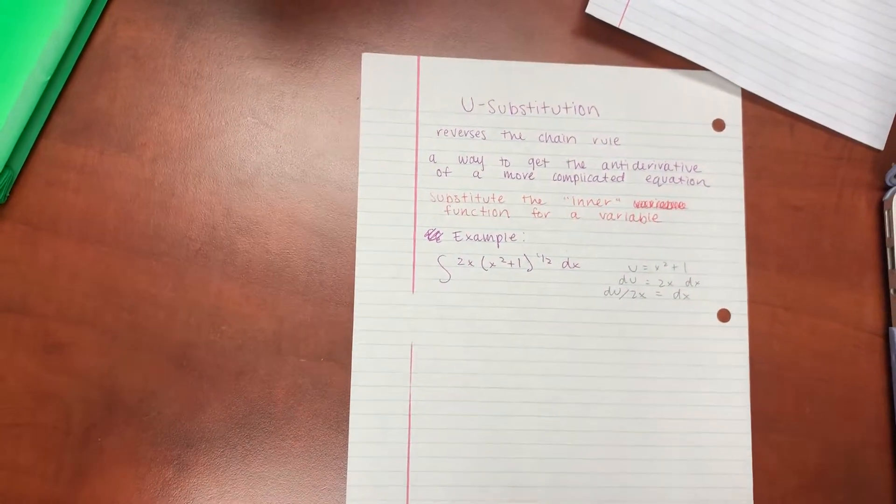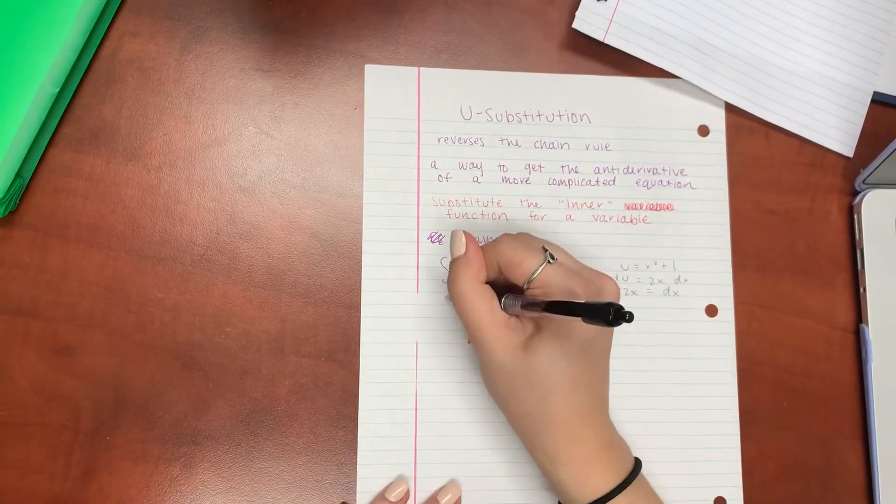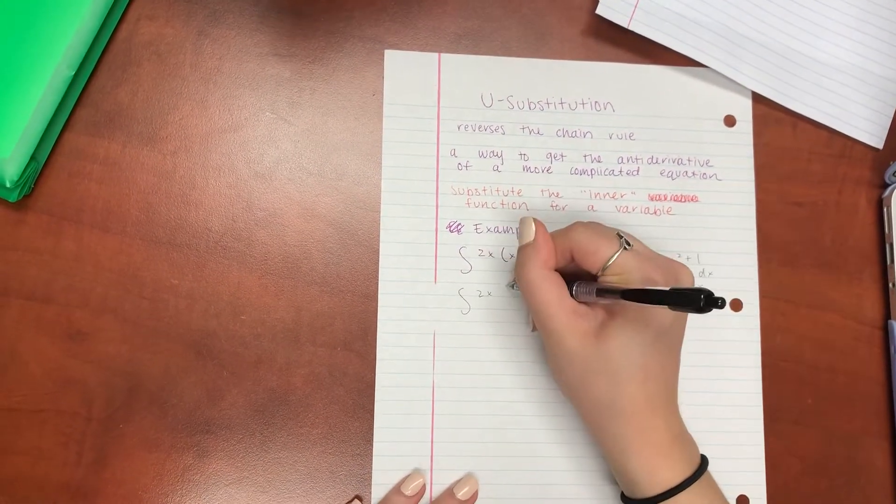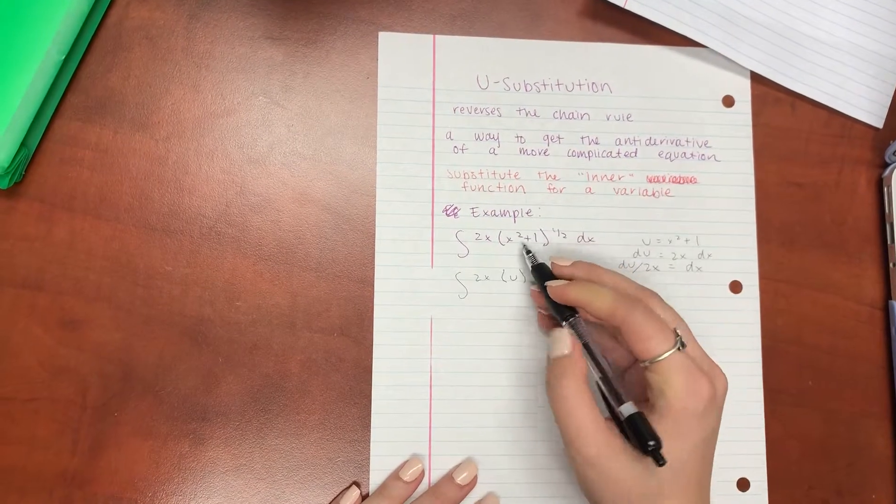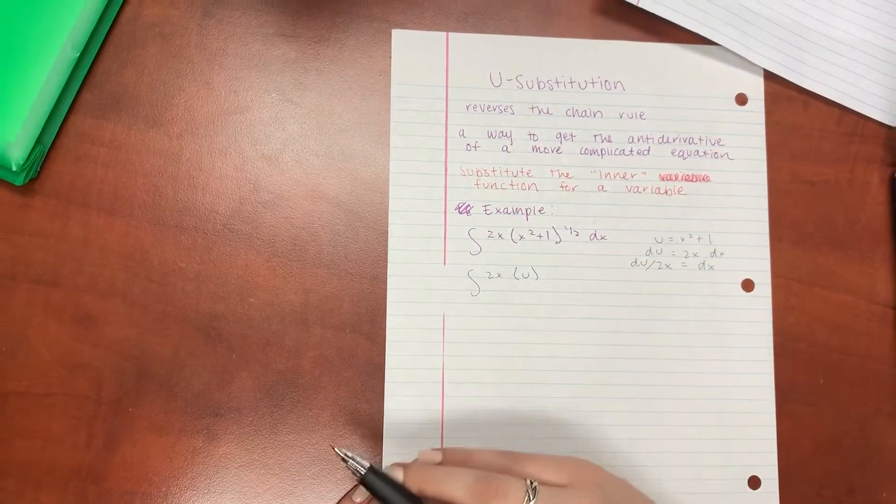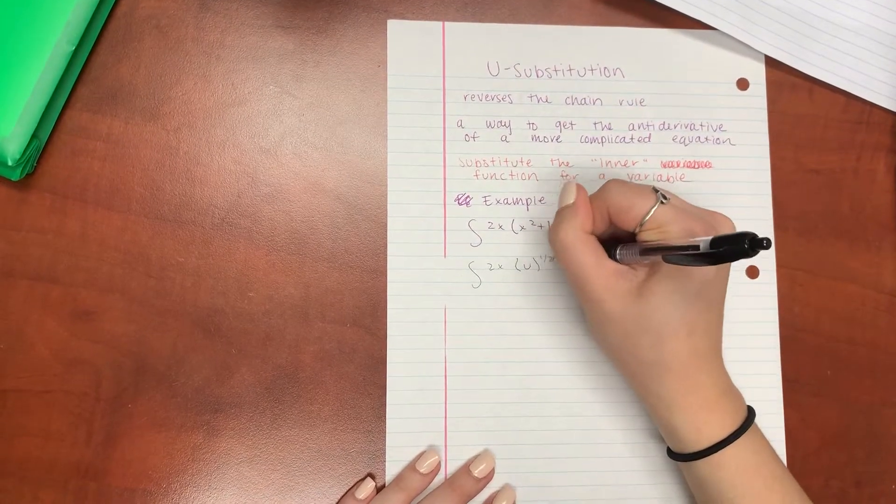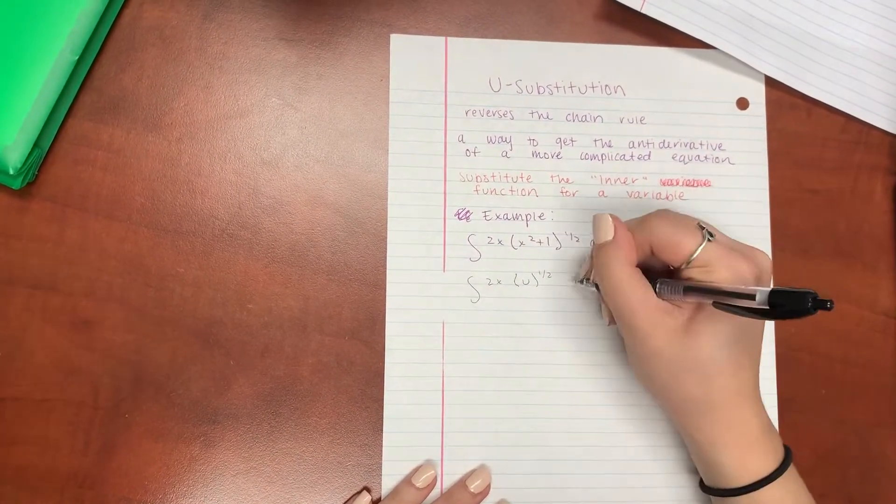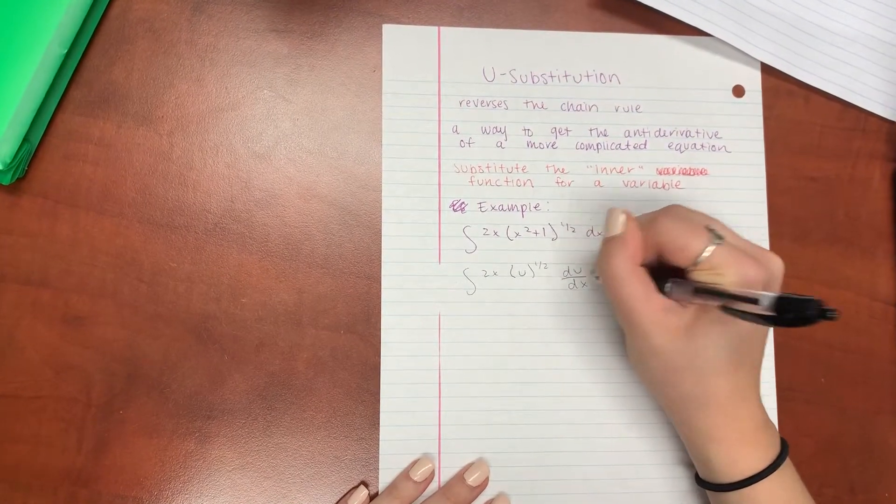And so now we want to plug this into the original equation. So as you can see, this x squared plus 1 does become just a regular u, but it's still going to be raised to the 1 half.